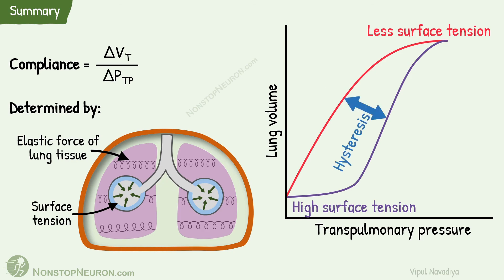The difference between the inspiratory and expiratory curves is called hysteresis. Conventionally, the deflation or expiration curve is used to measure compliance. Compliance varies with lung volume — in general, it's higher at lower lung volumes and lesser at higher lung volumes. During normal breathing, the parameters move between two points located near the deflation curve, and hysteresis is much less.